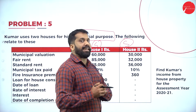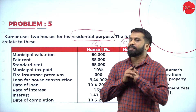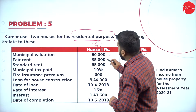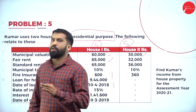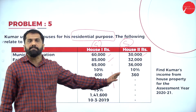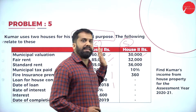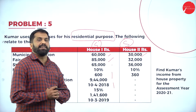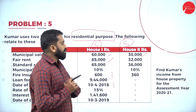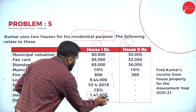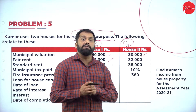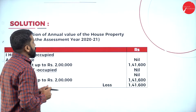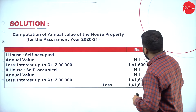If it is self-occupied, do we calculate anything? The answer is no — that calculation part will not be there. Municipal valuation is 60,000; fair rent and other details are given, but if it is self-occupied we will not consider them. We want only the interest paid. The interest paid is 1,41,600.